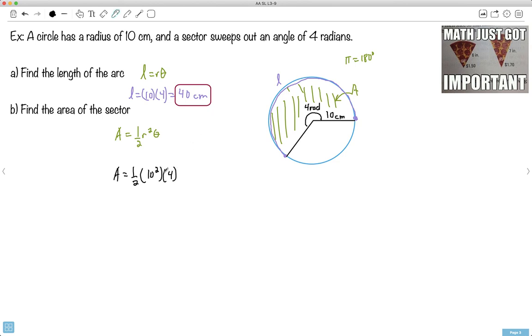Well, 10 squared is 100. 100 times 4 is 400. So it'll be 400 divided by 2, which is going to be 200. Now let's think about what units we should use. Area has units of the distance squared. So it'll be centimeters squared. There we go.